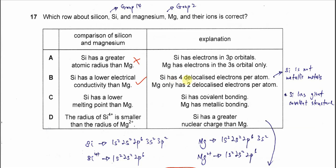Silicon has 4 delocalized electrons per atom. Magnesium only has 2 delocalized electrons per atom. This explanation is wrong because silicon is not a metallic metal. Delocalized electrons only apply to metallic metals like sodium, magnesium, and aluminum. Therefore this is wrong.